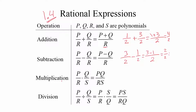For the multiplication rule for rational expressions, you have P divided by R times Q divided by S, which equals P times Q divided by R times S. Again, P, Q, R, S are all polynomials. For example, 3 halves multiplied by 5 eighths: you multiply 2 by 8, which is 16, and 5 by 3, which is 15.